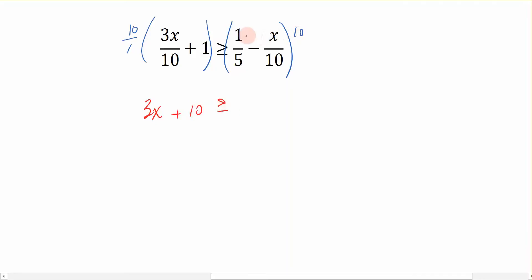Now the right hand side, what happens when I multiply 1 fifth times 10? Well, 5 divides into 10 two times, so 2 times 1 would just be 2, minus, these tens are going to cancel, gives me just x. Now I want to collect all of my variables up on the left hand side. And I'm going to do that because that's going to give me all positive variables. So I'm going to add x to this side, giving me 4x. And I'm going to subtract 10 to the right hand side, and I get negative 8.